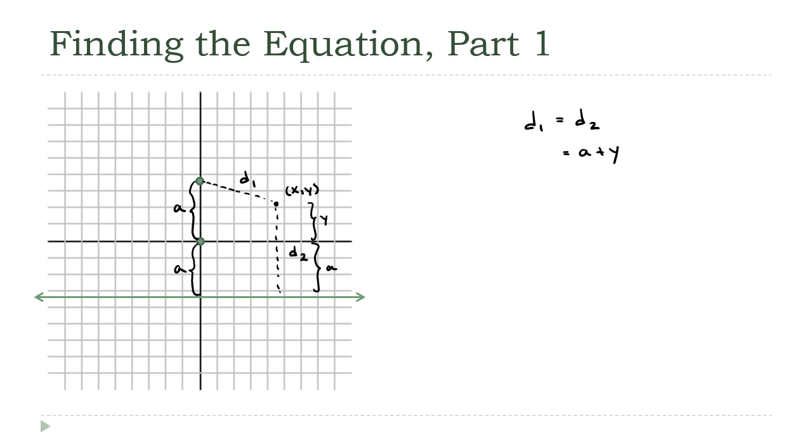Okay, so how about d1? Well, the coordinates of the vertex, because it's on the y-axis, must be 0 comma a. So now I can find d1 using the distance formula. This must be the square root of (x minus 0) squared plus (y minus a) squared.